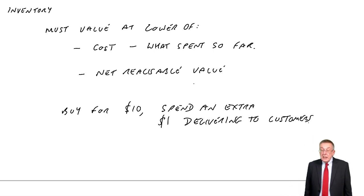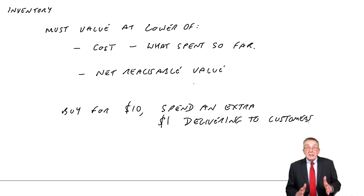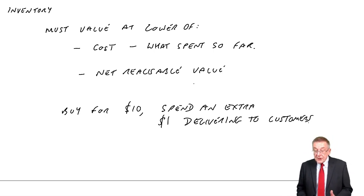Ultimately, it's costing me $11, but at the date of the statement, if these desks are in inventory, I've spent the $10 to buy them. I haven't yet spent the other dollar. I'll only spend that when I deliver them to customers. And if they're still in inventory, we haven't spent the extra dollar. So, even though ultimately it will cost me $11, as at the date of the statement, I've only spent $10. That's what we mean by the cost.